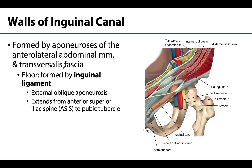One important wall that is often discussed and often comes up is the floor, which is formed by the inguinal ligament. The inguinal ligament is formed by the external oblique aponeurosis. While it forms the floor of the inguinal canal, it actually extends past the canal — extending all the way from your anterior superior iliac spine, or ASIS, to the pubic tubercle medially, extending past the expanse of the inguinal canal.